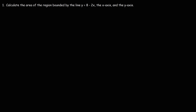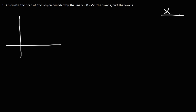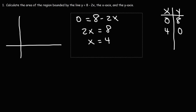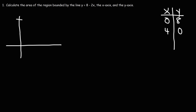Problem 1: Calculate the area of the region bounded by the line y equals 8 minus 2x, the x-axis, and the y-axis. Let's begin by drawing a picture. For y equals 8 minus 2x, the y-intercept is 8 (when x equals 0) and the x-intercept is 4 (set y to 0 and solve: x equals 8 divided by 2).